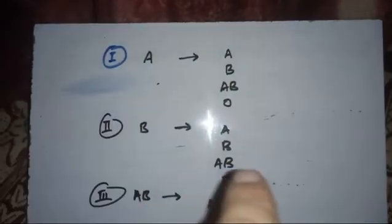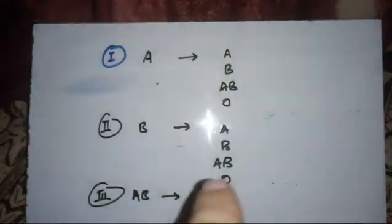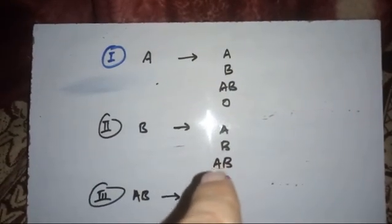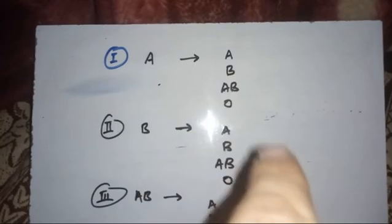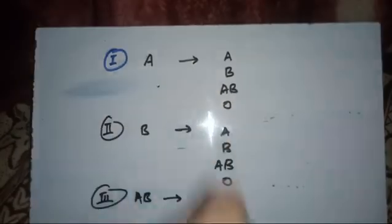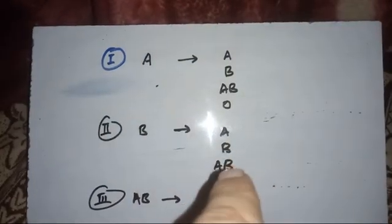B to AB: in the donor blood we look for the antigen, which is B. In the recipient blood we look for antibodies. AB has both A antigen and B antigen but no antibodies against A and no antibodies against B. So B can be transfused to AB easily.